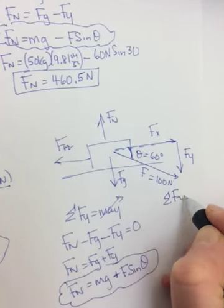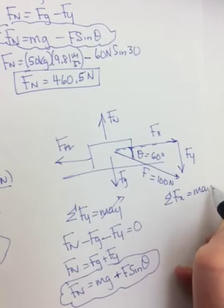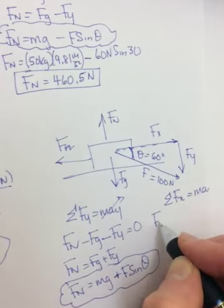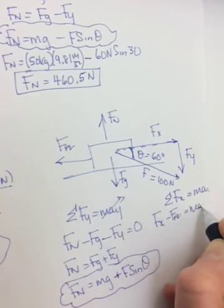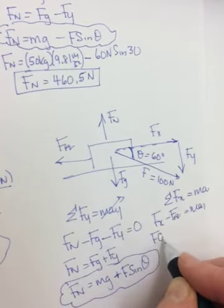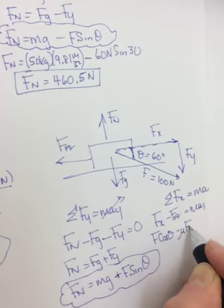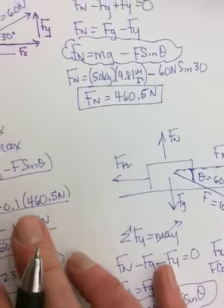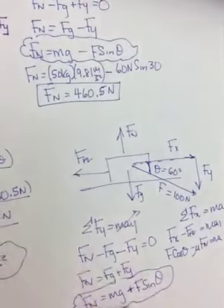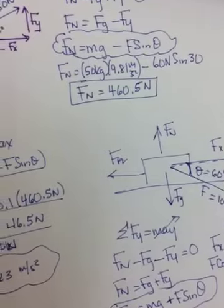Go to the sum of the forces in the x direction. Nothing changes. So it will be fx minus friction. Equals max. Fx is f cos theta. Minus mu fn. So it looks identical to this one does for when you're pulling up. So it's only a change in the y direction.